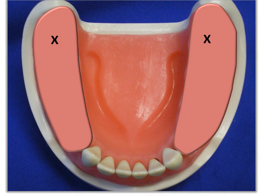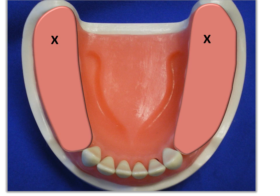When designing the partial, we first identify our abutment teeth, identify guiding planes through surveying, identify restorative needs, and correlate those needs with rest seat preparation, guiding planes, and retention for the abutments. We will draw restorative needs first, then rest seats and proximal plate guiding planes, then establish the major connector, sketch out the base, and finally sketch out the clasping.